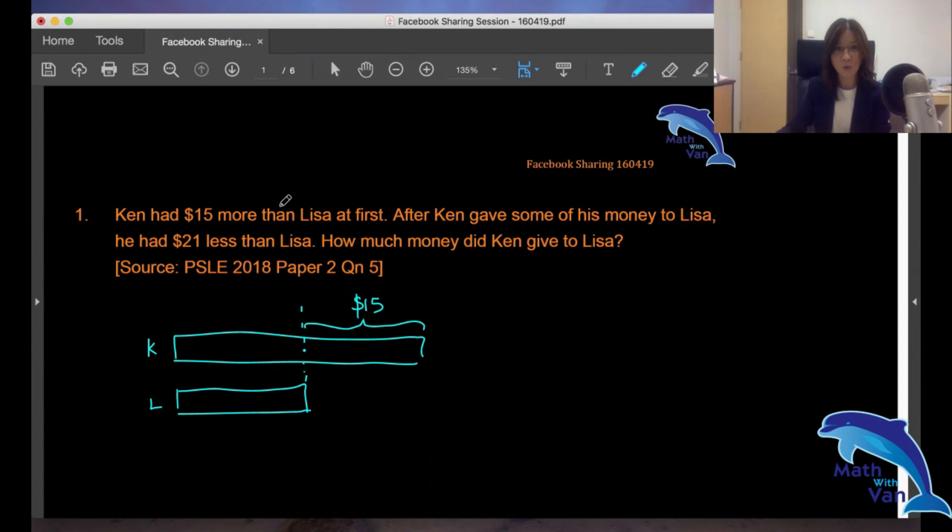We were told that Ken gave some of his money to Lisa, and in the end he had $21 less than Lisa. Let's imagine the scenario: if Ken gave $15 to Lisa, what would the difference be? Lisa would have $15 more. So you see the model is very clear, it's self-explanatory. He must have given more than $15.